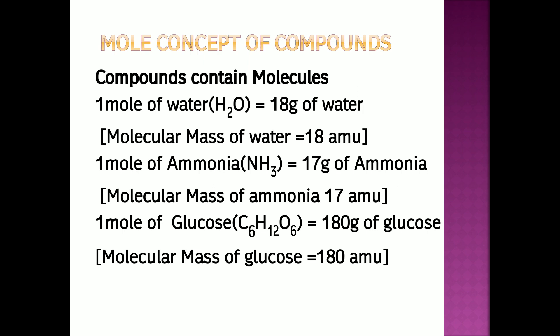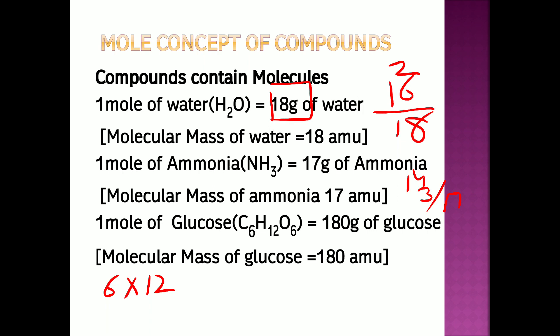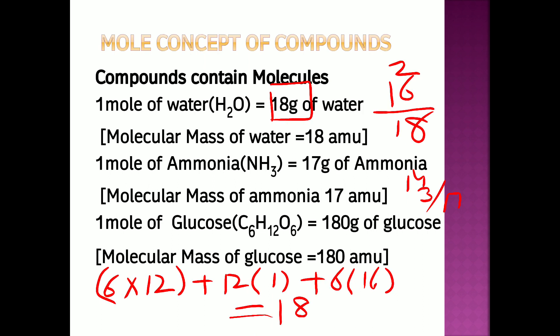When we talk about compounds which contain molecules, we calculate their molecular mass. One mole of water: 2 hydrogen (mass 2) plus oxygen (mass 16) gives 18, so 1 mole of water is 18 grams. One mole of ammonia: nitrogen (14) plus 3 hydrogen (3) = molecular mass 17, so 1 mole of ammonia is 17 grams. One mole of glucose: 6 carbons (6×12) + 12 hydrogens (12×1) + 6 oxygens (6×16) = 180 AMU, so 1 mole of glucose is 180 grams — the gram molecular mass.